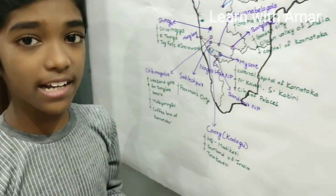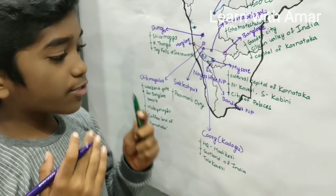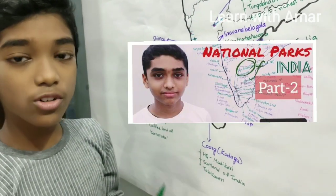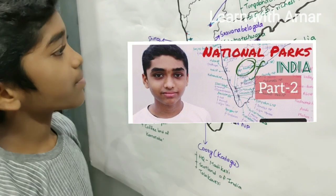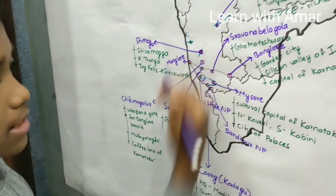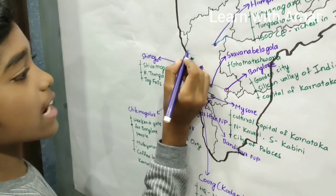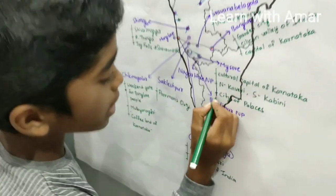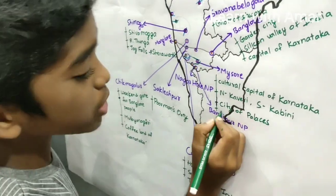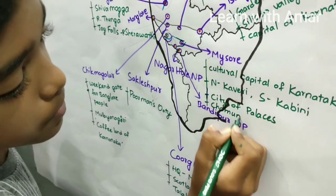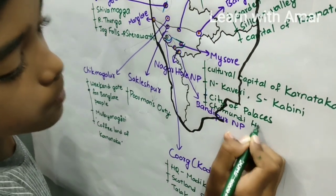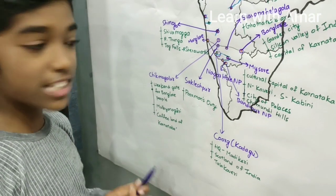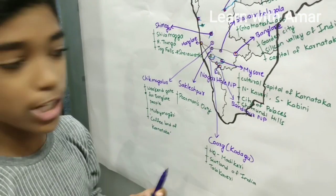We find many national parks in Karnataka — check out the video in our channel for detailed information on the national parks of South India. Also, Chikmagalur is situated on the foothills of the Mullayanagiri range, and Mysore is situated on the foothills of Chamundi Hills.